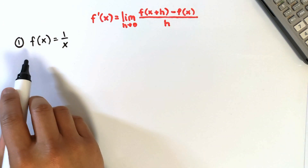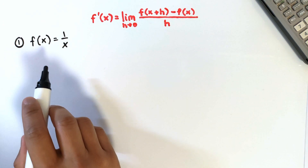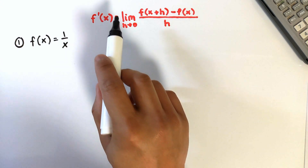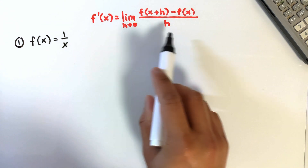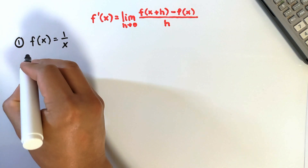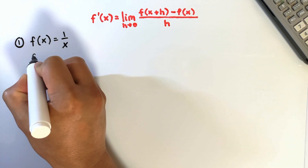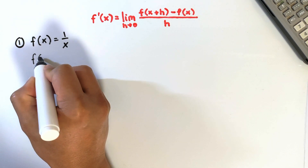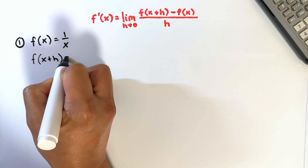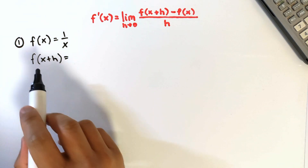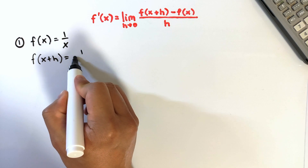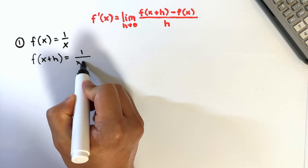The given function is f of x equals 1 over x. The first step in finding the derivative using this definition is to find f of x plus h. This simply means you need to substitute x plus h for x, so we have 1 over x plus h.